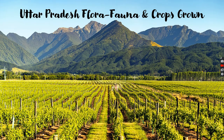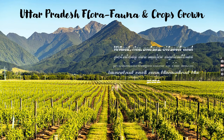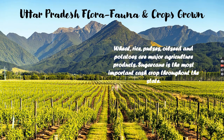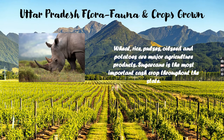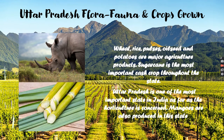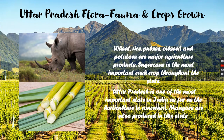Now, Uttar Pradesh's flora, fauna and crops. Wheat, rice, pulses, oil seeds and potatoes are the major agricultural products, and sugarcane is the most important cash crop throughout the state. Uttar Pradesh is one of the most important states in India as far as horticulture is concerned, and mangoes are also produced in this state.